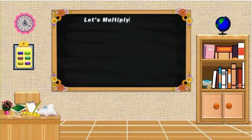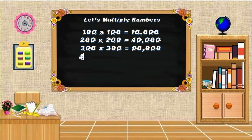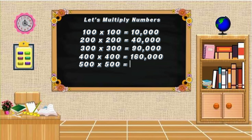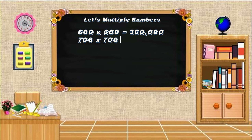Let's multiply numbers. 100 multiplied by 100 is equals to 10,000. 200 multiplied by 200 is equals to 40,000. 300 multiplied by 300 is equals to 90,000. 400 multiplied by 400 is equals to 160,000. 500 multiplied by 500 is equals to 250,000. 600 multiplied by 600 is equals to 360,000. 700 multiplied by 700 is equals to 490,000.